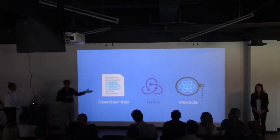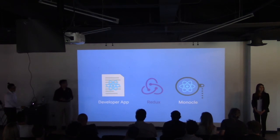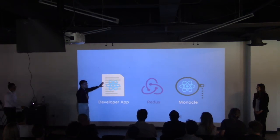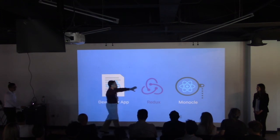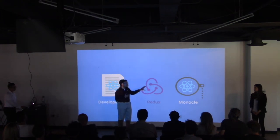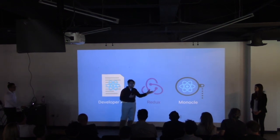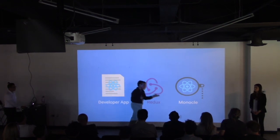We also needed a way to transfer this information from the developer's app to Monocle — two isolated React applications. We achieved this by implementing Redux. Redux is a library that focuses on storing state as a single immutable state tree. Once we have our data from the developer application, we can dispatch information to our Redux store, where our Monocle application can then listen on state changes and re-render the component tree to visualize the new state changes.